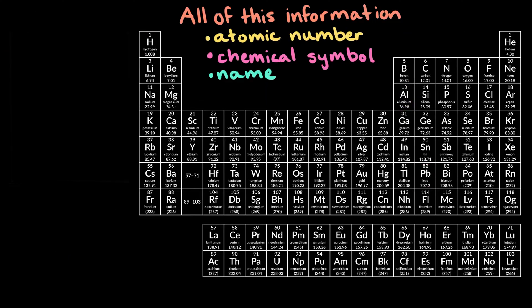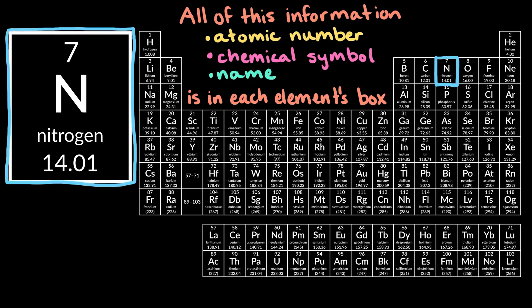All of this information is contained inside of each element's box on the periodic table. For example, here's the box for the element nitrogen. At the top of the box is nitrogen's atomic number, which is 7. Remember that this is equal to the number of protons in each atom of nitrogen, as well as the number of electrons.